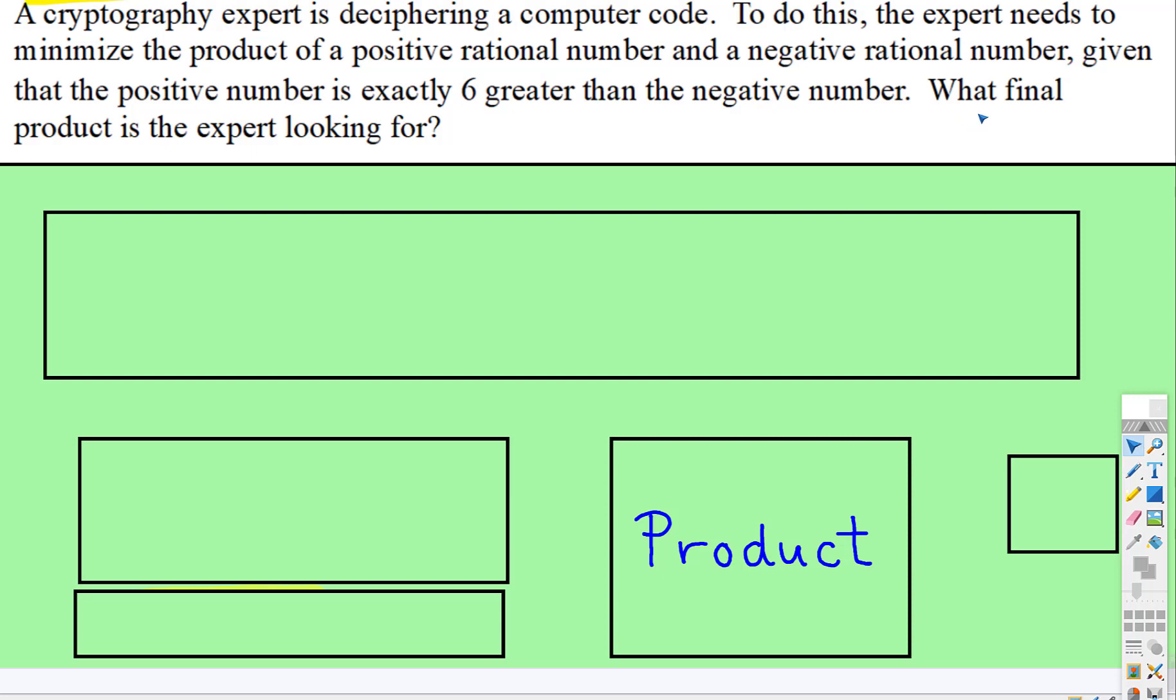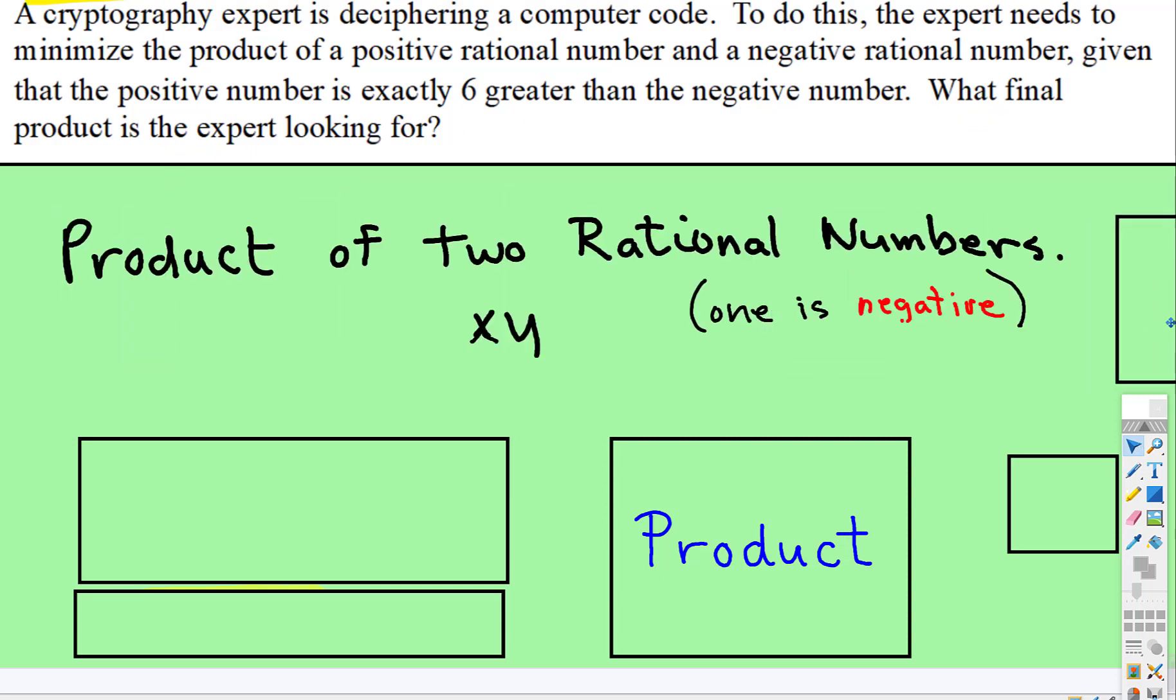What we want to know is: what final product is the expert looking for? So the first thing is, all they're asking for is the product of two rational numbers. That's it. If we don't know the two numbers, we can just name them x and y. We know that they're not the same number because it tells us that the positive number is exactly six greater, and it tells us that one of these is positive, one's negative.